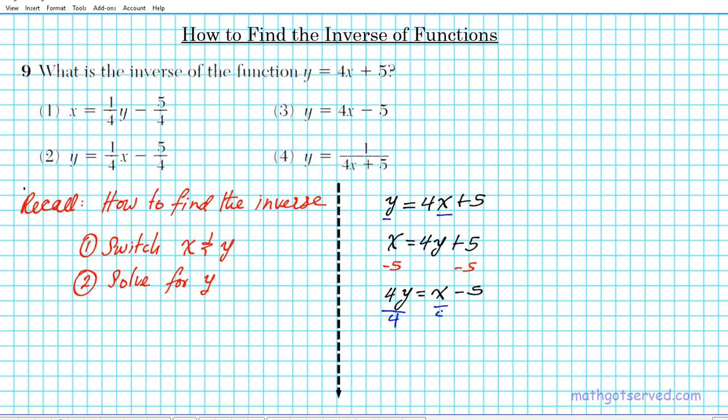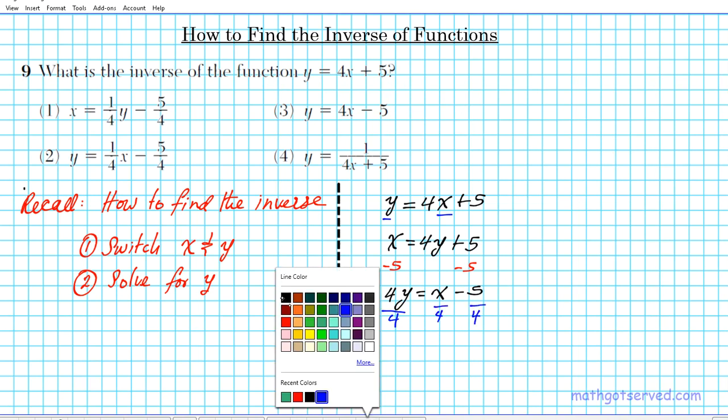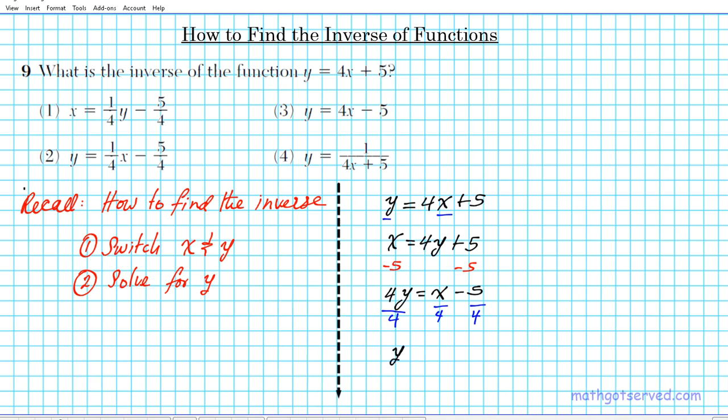To get y isolated, we're going to divide every term by 4. Your final answer is y equals one-fourth x minus five-fourths.